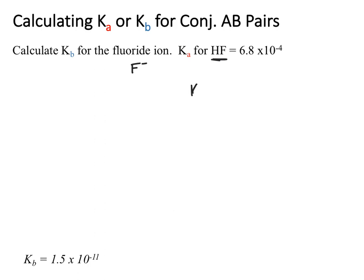We'll take advantage of this relationship we know and solve for Kb. So Kw divided by Ka: 1×10⁻¹⁴ divided by 6.8×10⁻⁴. Plug that into our calculator and we get 1.5×10⁻¹¹ as our Kb.